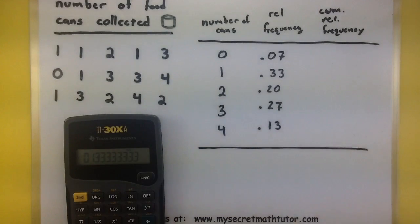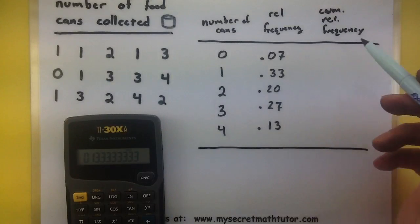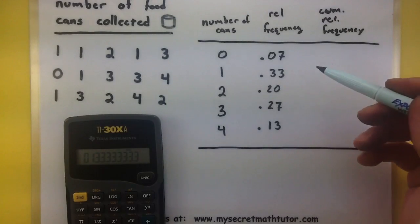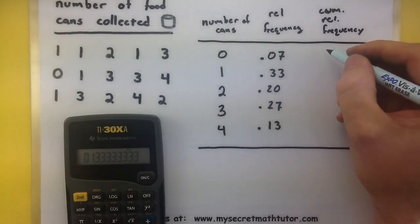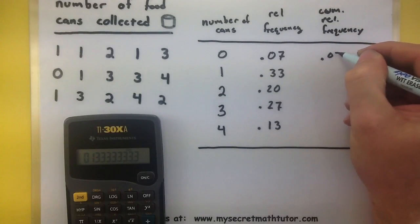Now that we have all of our relative frequencies, the cumulative frequency will keep track of the total relative frequency up to this point. Starting with zero, my total right now is just .07.